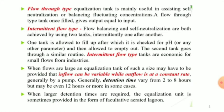For the intermediate flow-through type, two tanks are used: one is for flow balance and the other is for self-neutralization. One tank is allowed to fill up with water, which is checked for pH, and then the secondary transfer is checked through a signal routine.